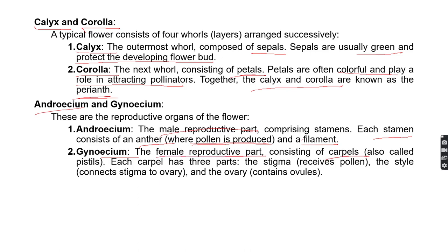Next is the gynoecium. Gynoecium is the female reproductive part and it consists of the carpel. The carpel has three important structures: the stigma, which receives the pollen; the style, which connects the stigma to the ovary; and the ovary, which contains ovules. The ovary and ovules basically produce fruits and seeds.